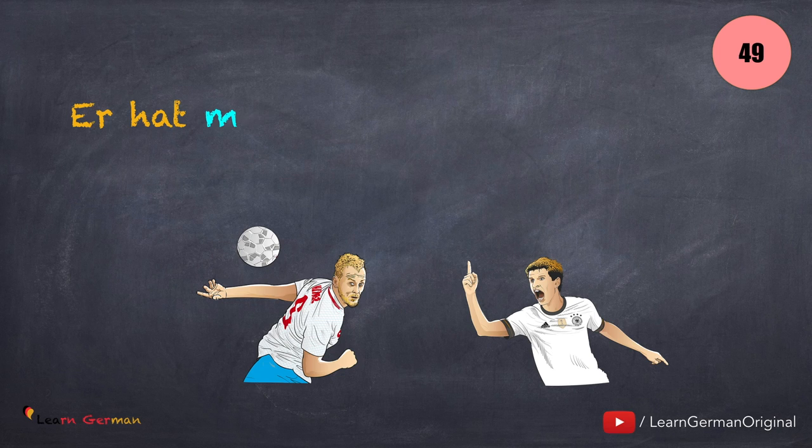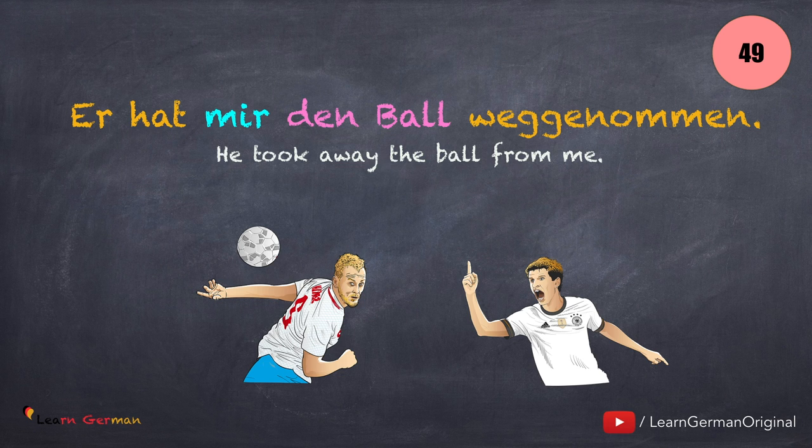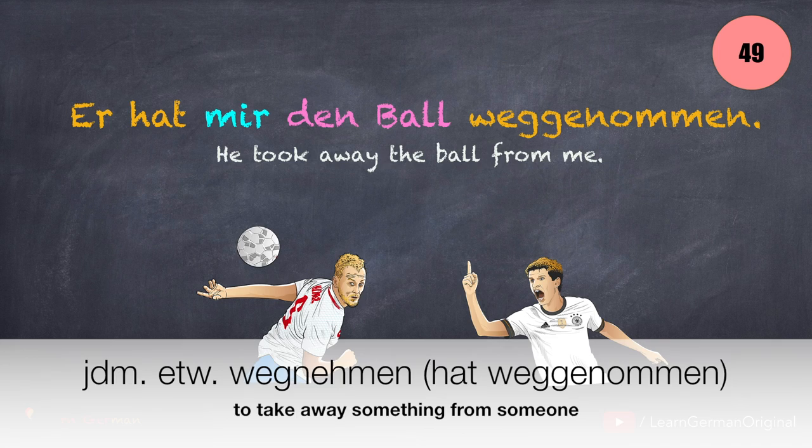And here is the next sentence: Er hat mir den Ball weggenommen. The verb here is wegnehmen: Jemandem etwas wegnehmen.